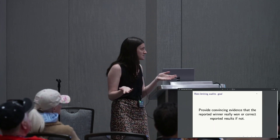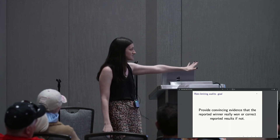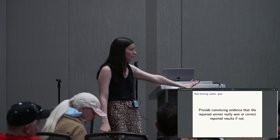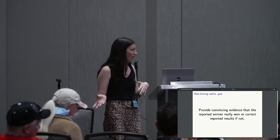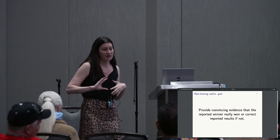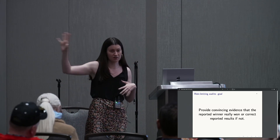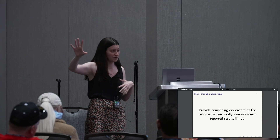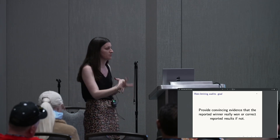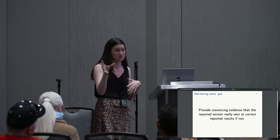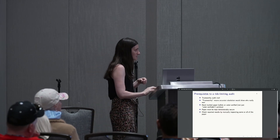The third idea is risk-limiting audits, which is what I'm talking about today. This is where we actually have statistical guarantees. We know that if the outcome is wrong, we have a certain percentage chance of correcting it, and we're never going to reverse the correct outcome. This gives us the type of guarantee we want, and it's much more efficient than full hand counts, but it will go to a full hand count if what you're seeing is unusual — which is exactly what you would want.